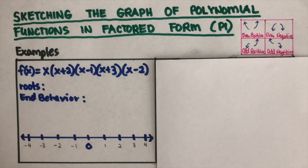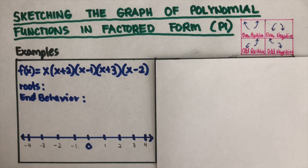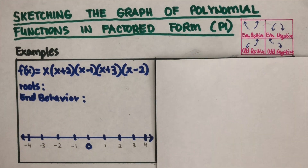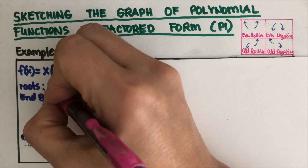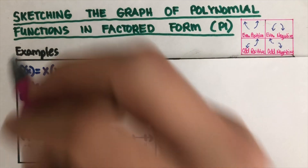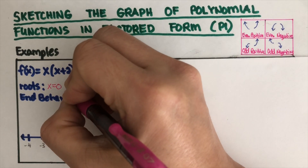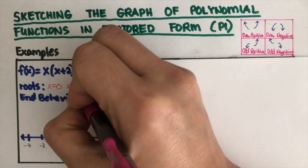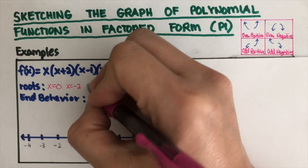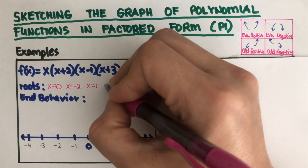Now let's find the roots. To find the roots, we are going to use the zero product property. The first root is x equals zero. The second root is x equals negative two, using the zero product property. The third root is x equals positive one. The fourth root is x equals negative three.